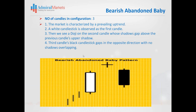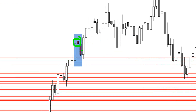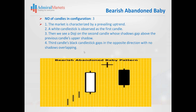The abandoned baby — the bearish version — also has three candles. Again, a prevailing uptrend. The difference here is that instead of an inside candle, we have a doji hanging on top of the bullish candle, above it — rather than a bearish candle within the bullish candle, we have a doji above it. Here we can see an example with a doji hanging above the big white candle.